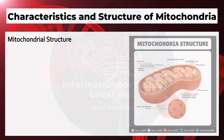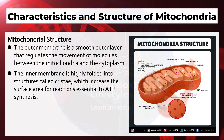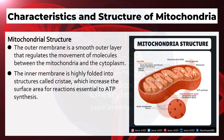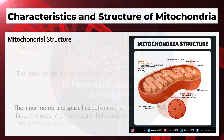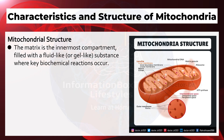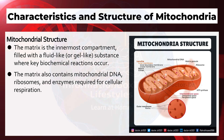Mitochondrial Structure: The outer membrane is a smooth outer layer that regulates the movement of molecules between the mitochondria and the cytoplasm. The inner membrane is highly folded into structures called cristae, which increase the surface area for reactions essential to ATP synthesis. The intermembrane space lies between the inner and outer membranes and helps maintain the proton gradient necessary for ATP production. The matrix is the innermost compartment, filled with a fluid-like or gel-like substance where key biochemical reactions occur.